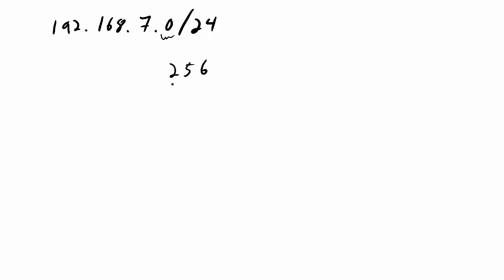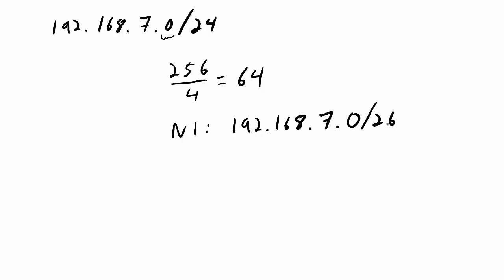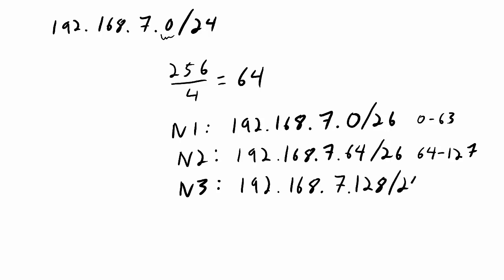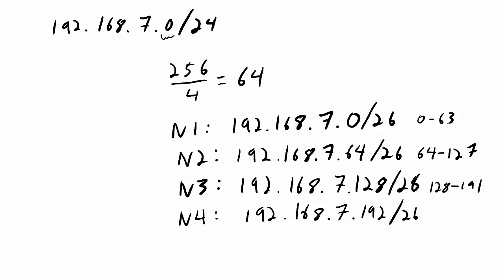So I get four networks: network one is 192.168.7.0/26 with addresses 0 to 63; network two is 192.168.7.64/26 with addresses 64 to 127; network three is 192.168.7.128/26 with addresses 128 to 191; and network four is 192.168.7.192/26 with addresses 192 to 255.